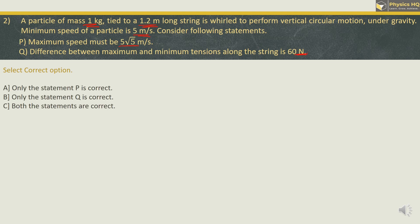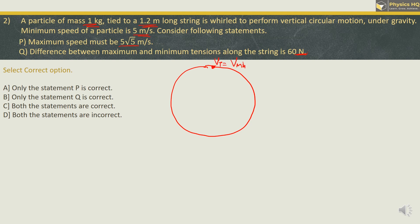For a particle which is performing vertical circular motion, the velocity at the top will always be minimum for that particular motion, and it is given here as 5 meter per second. Velocity at the bottom will be maximum because when the particle comes down it gains velocity. We are supposed to verify whether this maximum speed is equal to 5 root 5 or not. First, we will check whether this given velocity at the top is equal to the critical minimum speed or not.